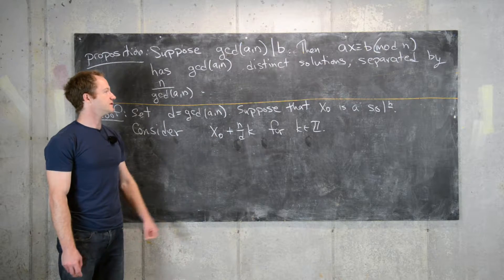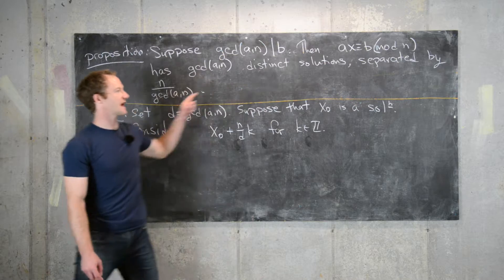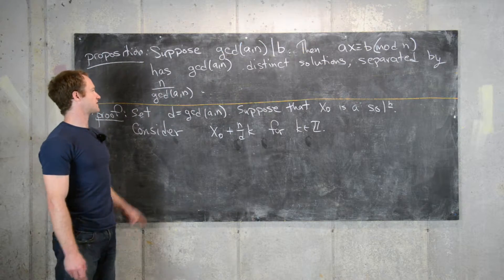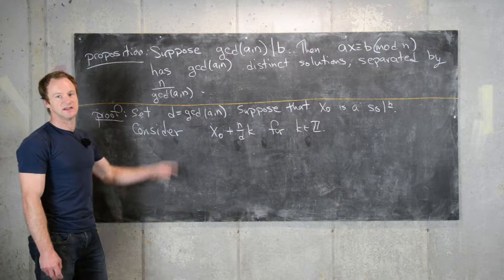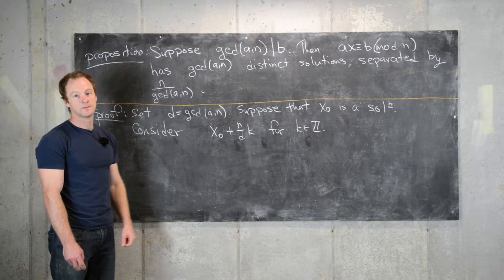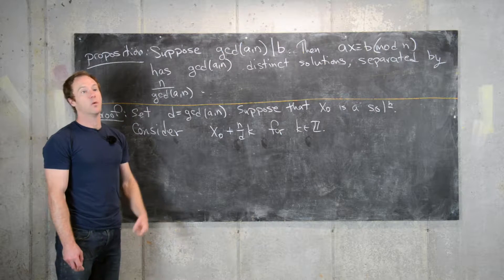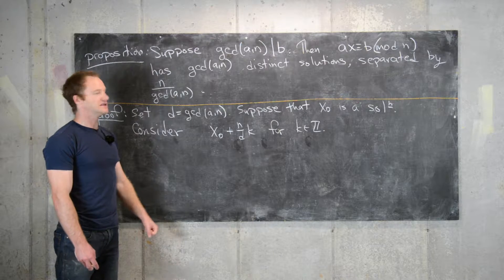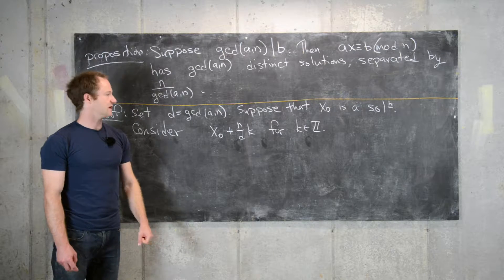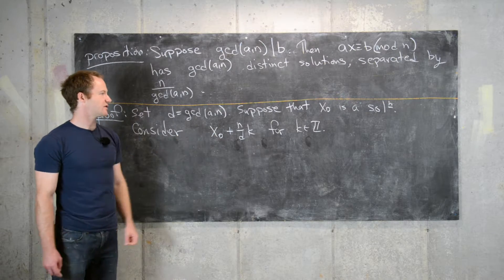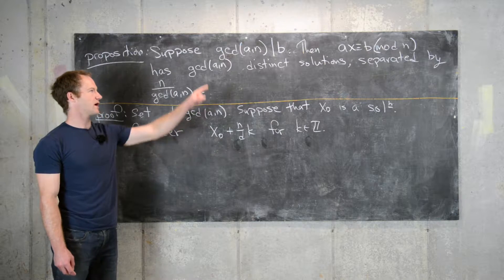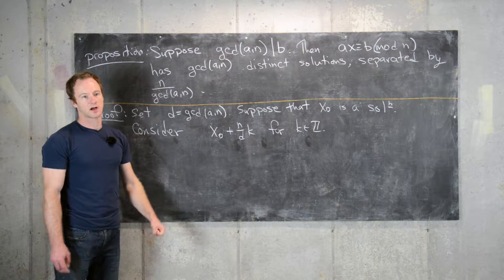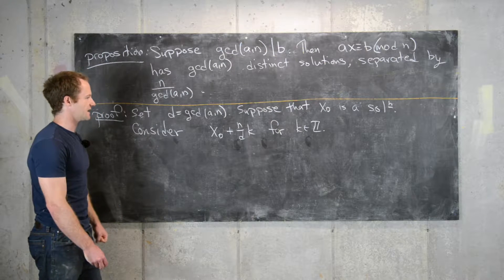And if we can do that, then we've shown the second part of this statement — in other words, that they're separated by n over the GCD, which we're writing as n over d. And once we've done that, we can show that there are only GCD(a,n) of these. So let's plug this into the linear congruence and make sure that it's satisfied.